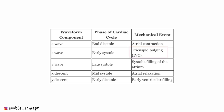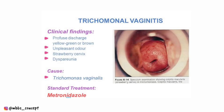Another question asked about the event related to the C-wave in JVP — it is the tricuspid valve bulge. In one question they gave a history of strawberry vagina and asked for the cause — it is Trichomonas.